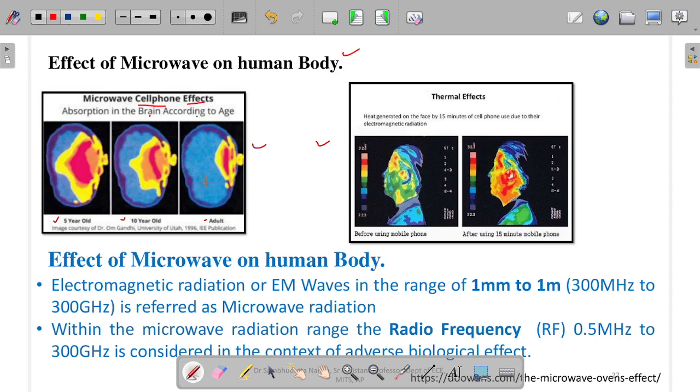Now, these are based on a limited time of radiation exposure. If more time is spent, the effect will increase. The second thing is thermal effects - heat generated on the face by 15 minutes of cell phone use due to electromagnetic radiation.